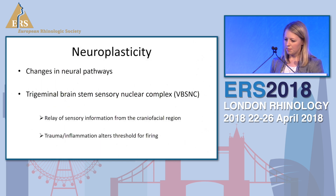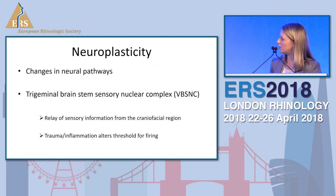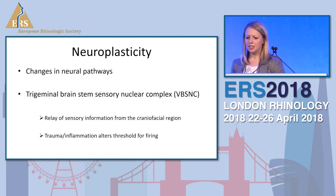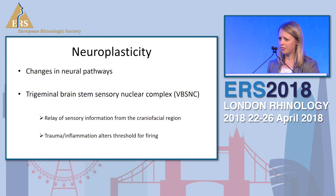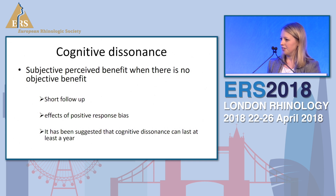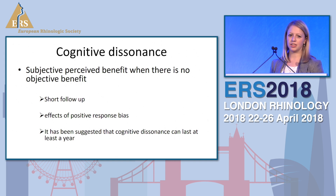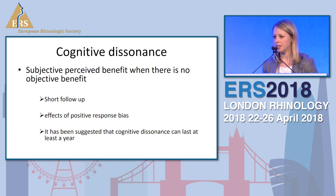One explanation for why patients improve post-operatively after contact point removal is neuroplasticity — a concept describing changes in neural pathways. The trigeminal brainstem sensory nuclear complex relays sensory information from the craniofacial region, and trauma or inflammation in this area may alter the firing of this complex, so a small amount of post-surgical inflammation may increase pain. There's also the concept of cognitive dissonance — a subjective perceived benefit where there is no objective benefit — which has been suggested to last up to at least a year. Additionally, positive response bias is relevant, as in many studies the operating surgeon called patients to ask if they felt better, often using closed questions.